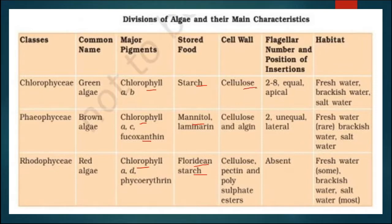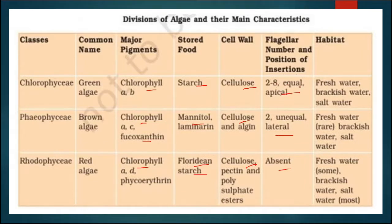Their cell walls also vary: in Chlorophyceae it is made of cellulose; in Phaeophyceae it is cellulose and algin; in Rhodophyceae it is cellulose, pectin, and polysulfate esters. The number and size of flagella also vary — Rhodophyceae has no flagella; Phaeophyceae has 2 unequal flagella attached laterally; Chlorophyceae has 2 to 8 equal flagella fixed at the apical region. Regarding habitat: Chlorophyceae members live in fresh, brackish, and salt water; Phaeophyceae is rare in fresh water, mostly in brackish and salty water; Rhodophyceae is similarly mostly in brackish and salty water.